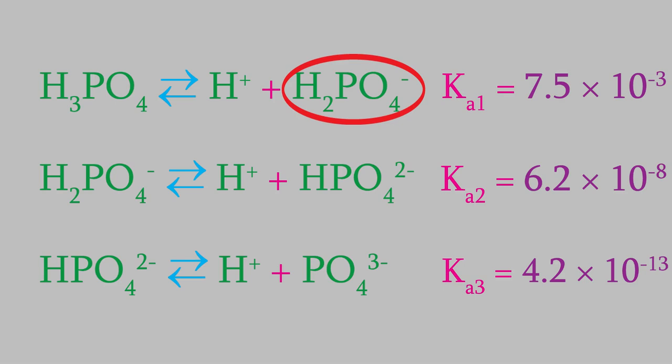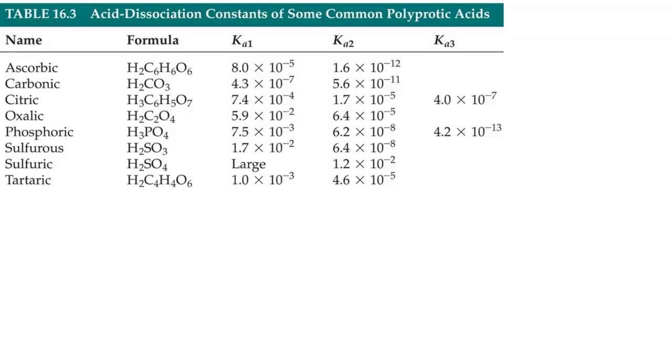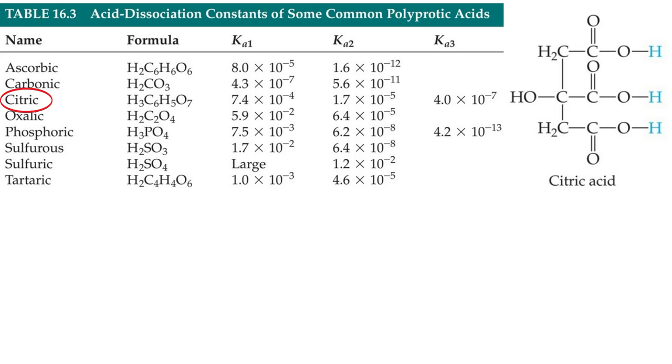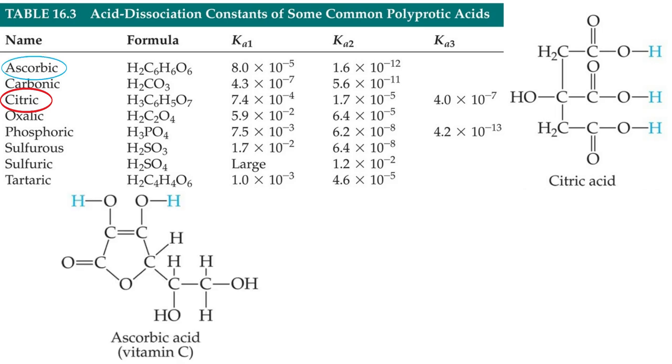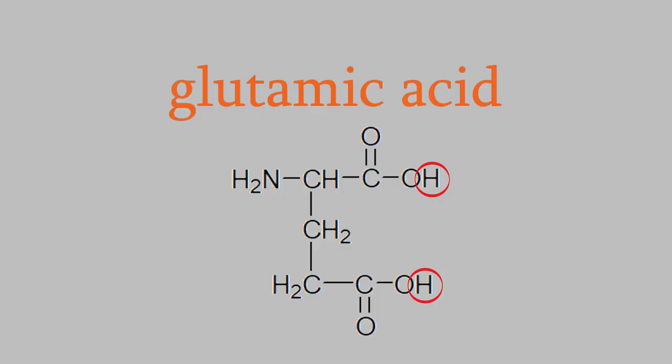Acids like this that can lose more than one hydrogen ion are called polyprotic acids. Some very common acids that you're familiar with are polyprotic acids, like citric acid, which can lose up to three hydrogens, and ascorbic acid, called vitamin C, which can lose two hydrogens. Many amino acids are also polyprotic acids.